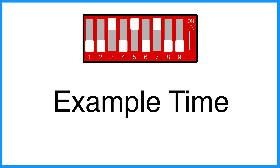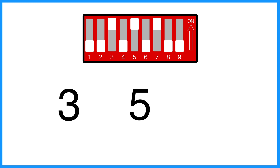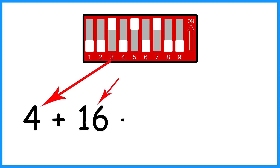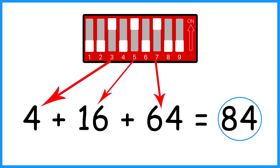Now let's do an actual example. Say I go to a theater and I want to know the last DMX address used in their lighting grid. I look at the fixture and I notice DIP switches three, five, and seven are flipped up. Switch three has a value of four, switch five has a value of 16, and switch seven has a value of 64. So four plus 16 plus 64 equals 84 — that's the last starting value of the DMX fixture in their lighting grid.